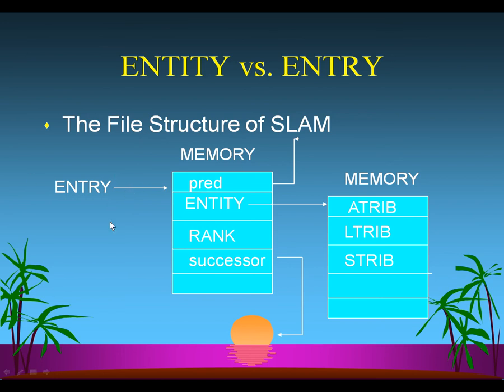Also, if an entity is on the event calendar — which is a special type of file — it will also have an entry pointer associated with it. If the entity is no longer in a file and has been removed in the code of an event routine, then the entity only exists in memory but there is no entry pointer for it. There will only be an entity pointer for it. So it's important to learn the difference between an entry and an entry pointer, and an entity and an entity pointer.